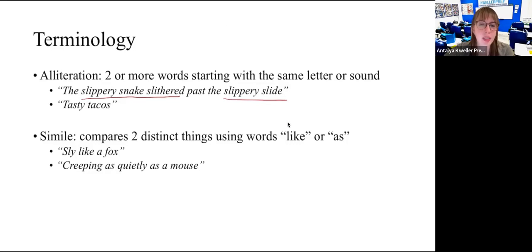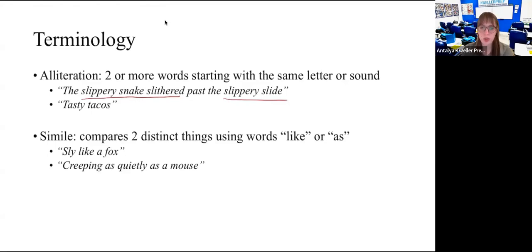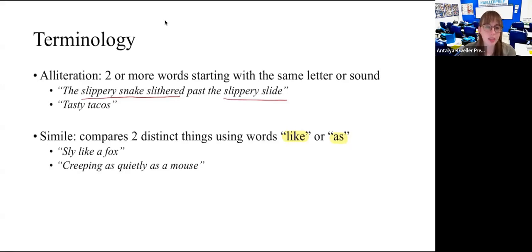That's alliteration. Then we have simile. A simile is a type of comparison that uses the words 'like' or 'as' — it has to use those words, no matter what. So you can say someone is 'sly like a fox,' or someone 'creeps as quietly as a mouse.' As we see, they have the words 'like' and 'as.'